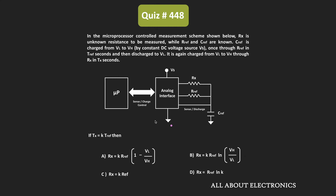This microprocessor is interfaced with one analog circuit. This analog circuit consists of two resistors and one capacitor, where R_reference and C_reference are of known values, while Rx is the unknown resistance. The microprocessor gives the command for the charging and discharging of the circuit.